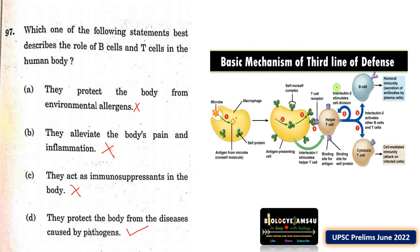B cells and cytotoxic T cells are both involved in mediating humoral immunity, where antibodies are synthesized, and also cell-mediated immunity, where infected cells are directly cleared by cytotoxic T cells from the system.